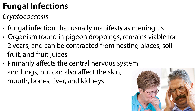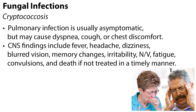Cryptococcus is a fungal infection that usually manifests as meningitis. The organism is found in pigeon droppings and remains viable for two years, and can be contracted from nesting places, soil, fruit, and fruit juices. Cryptococcus primarily affects the central nervous system and lungs, but can also affect the skin, mouth, bones, liver, and kidneys. Pulmonary infection is usually asymptomatic, but may cause dyspnea, cough, or chest discomfort.